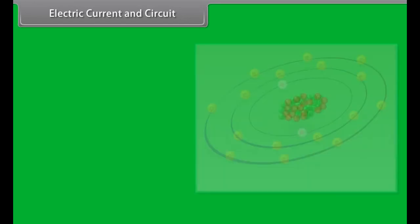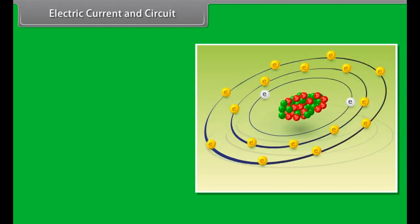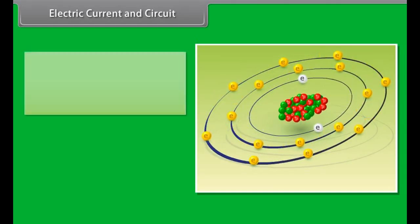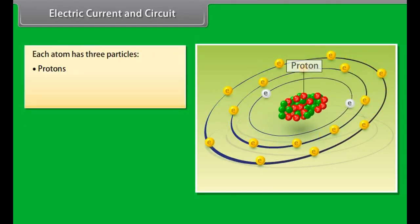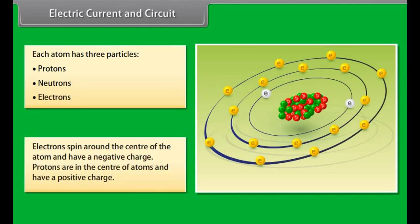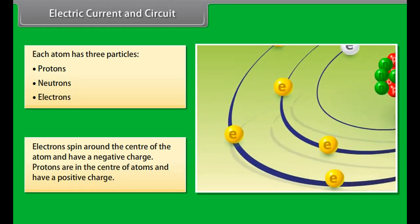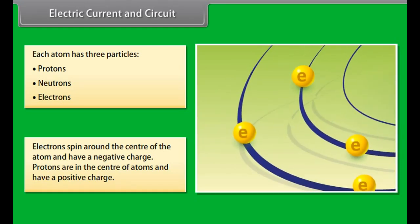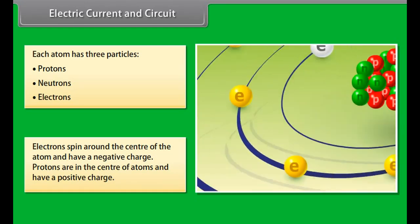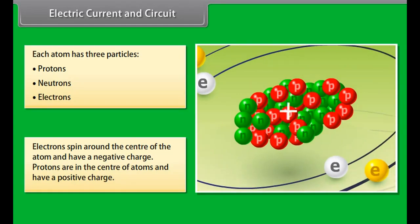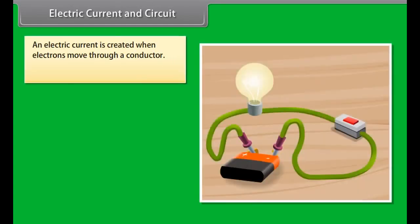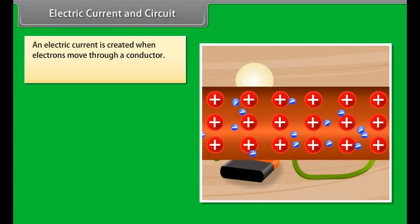Electric current and circuit: All things around us are made up of atoms. Each atom has three particles — protons, neutrons, and electrons. Electrons spin around the center of the atom and have a negative charge. Protons are in the center of atoms and have a positive charge. An electric current is created when electrons move through a conductor.